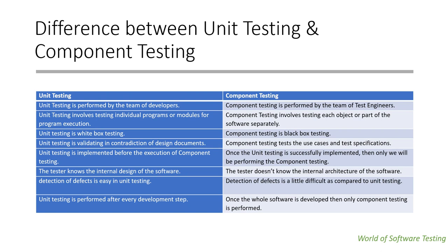Unit testing involves testing the individual programs or modules for program execution. Component testing involves testing each object or part of the software separately.